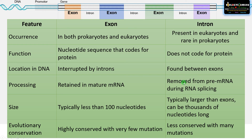Exons are generally small — less than 100 nucleotides — whereas introns are large and can be thousands of nucleotides long. Exons are highly conserved with very few mutations, as they code for a specific protein, whereas introns are less conserved, often with many mutations, since changes in intron sequences do not affect the protein as introns are non-coding sequences.